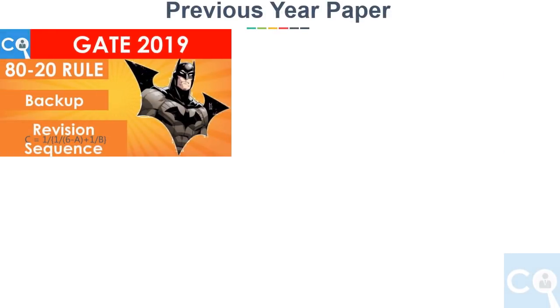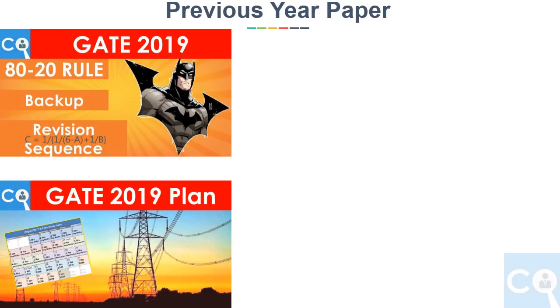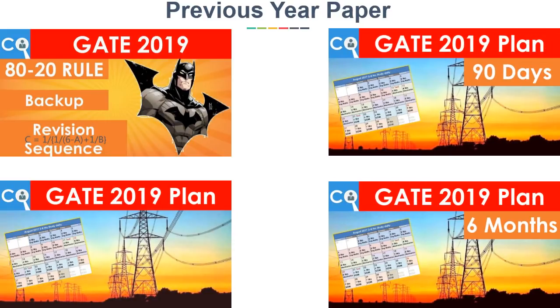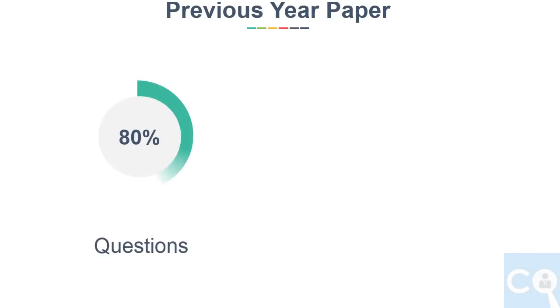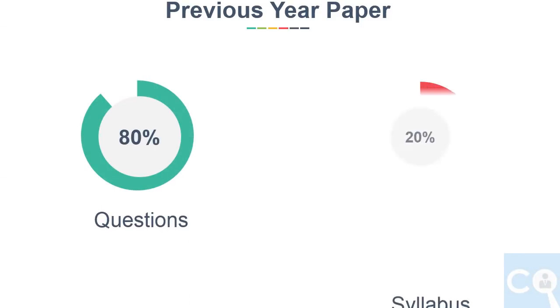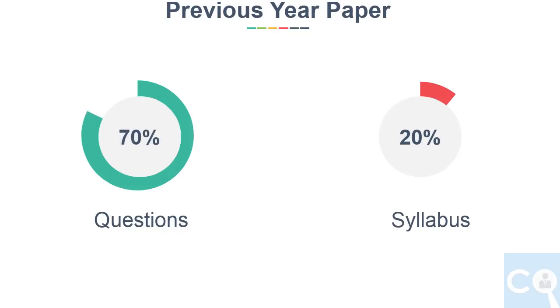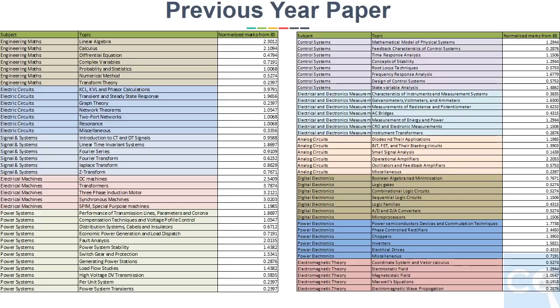Let's start with the first point — previous year paper analysis. If you have seen my old videos on the Batman plan for 1 year, 6 months, and 90 days, we derived all important topics using the 80-20 rule, which says 80% of questions come from 20% of the syllabus. For a conservative estimate, we took plus or minus 10%, meaning 70% of questions come from 30% of the syllabus. By analyzing the last 27 years of previous year papers, we arrived at normalized marks out of 85 for each topic.